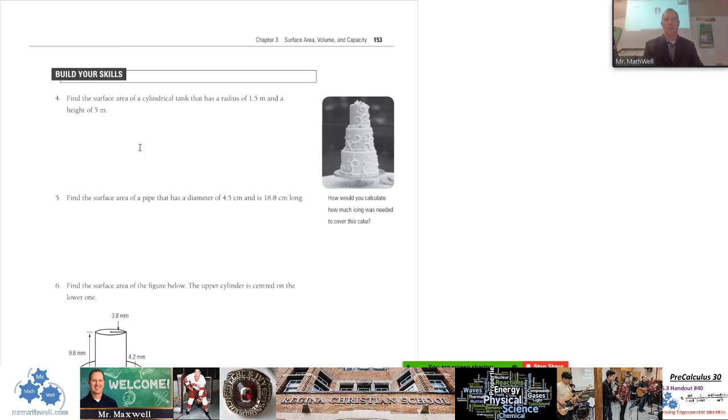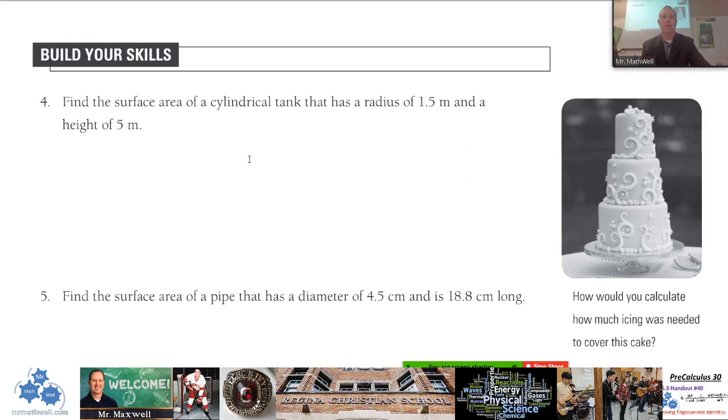Let's go to Build Your Skills question here and do this as an example. So it says find the surface area of a cylindrical tank. Cylindrical is the adjective describing something, so this is like a cylinder-like tank. A cylindrical tank that has a radius of 1.5 meters and a height of 5 meters.